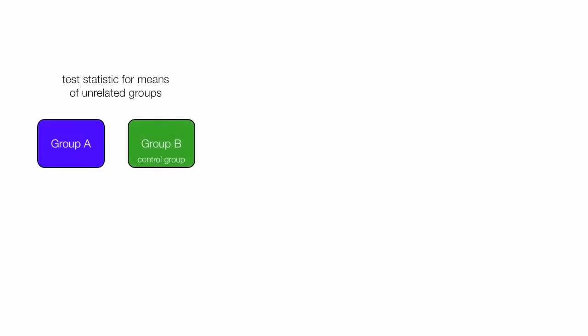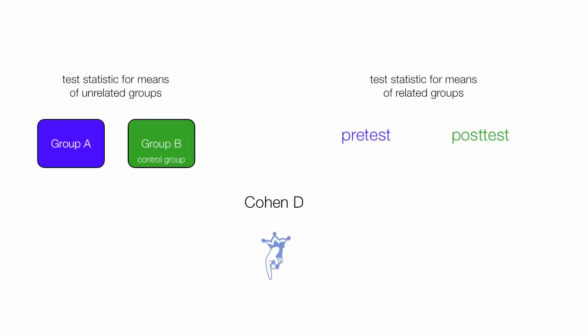The test statistic, or T-statistic, for means of unrelated groups is where you have a control group and an experimental group. T-statistics for means of related groups is where you have a pre-test and post-test of the same group. And I also have a video on Cohen's d.